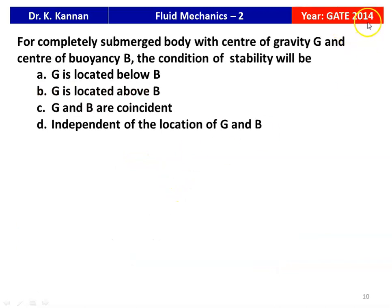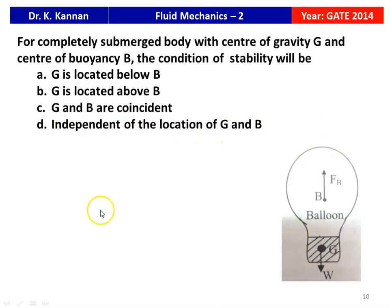The next question from the 2014 Gate Question Paper: 'For a completely submerged body with centre of gravity G and centre of buoyancy B, the condition of stability will be —' Options: G is located below B; G is located above B; G and B are coincident; independent of location of G and B. For a completely submerged body, the answer is: G is located below B — that is, the centre of gravity must be below the centre of buoyancy.